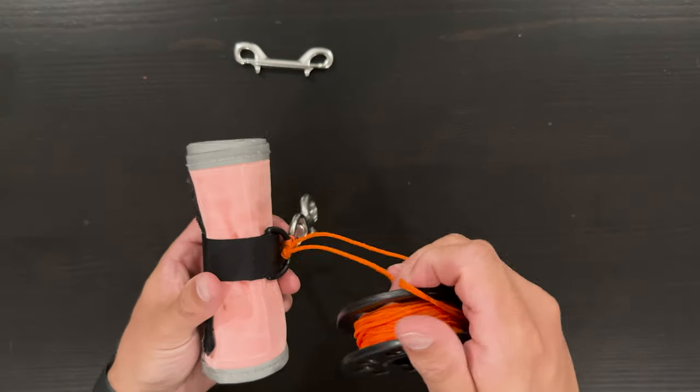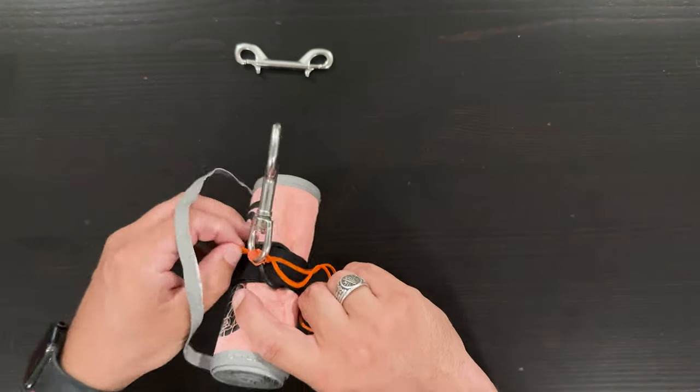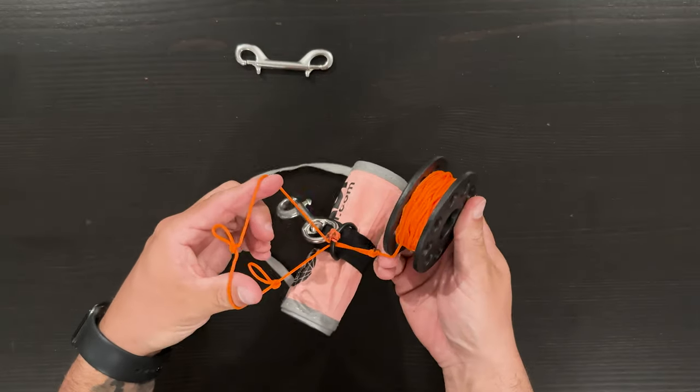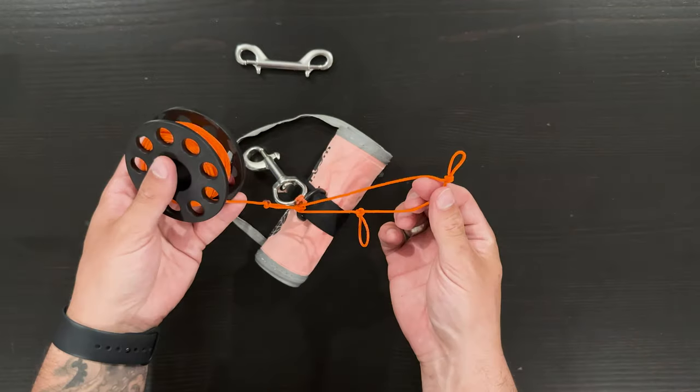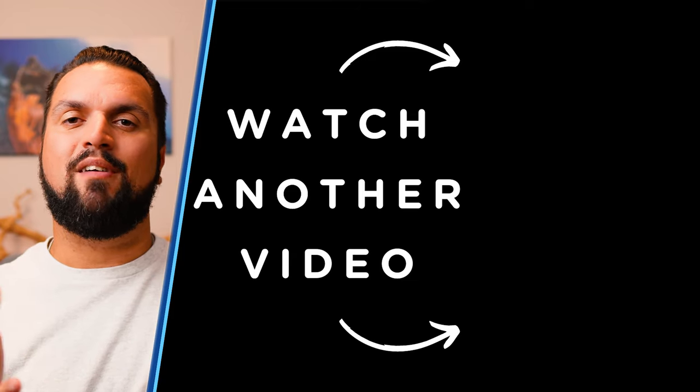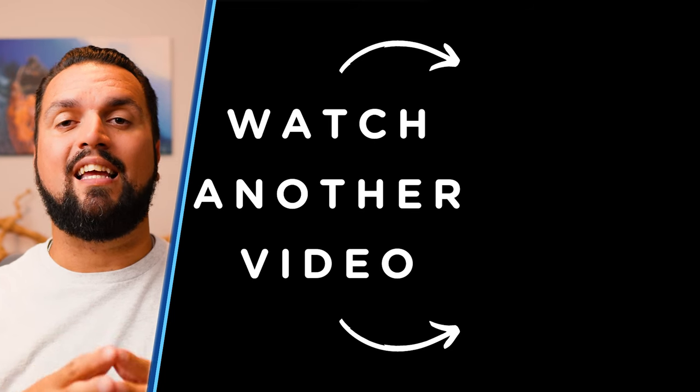Now we can feed that line through the DSMB or lift bag or whatever we're attaching it to and have that big loop available so we can pass our spool through the loop, creating a girth hitch for us. From there, we are all ready to launch our DSMB. Click or tap the screen now so you can learn how to do that properly and safely.